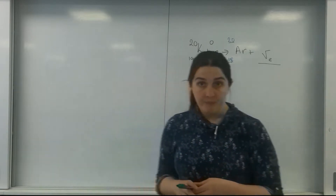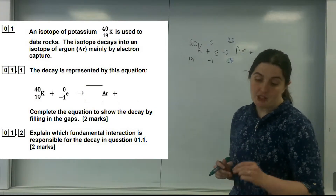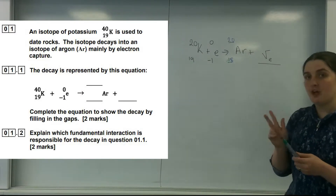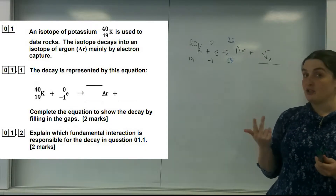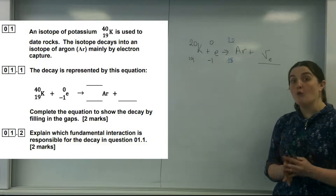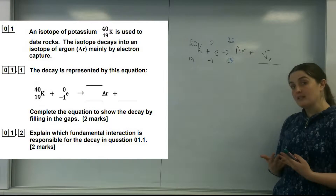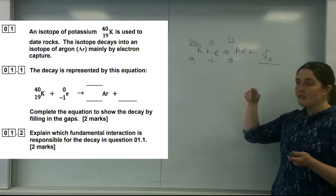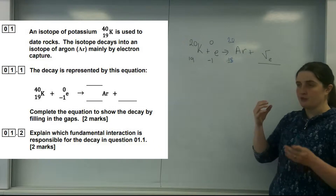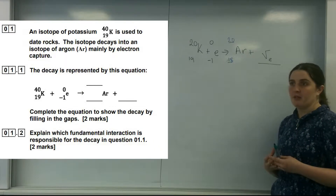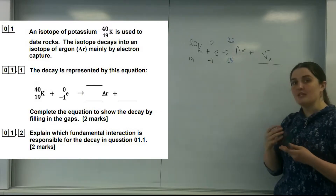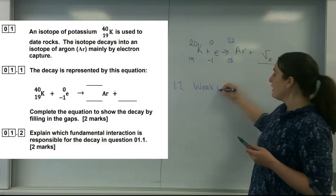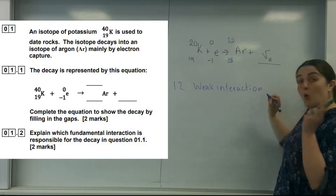Question 1.2: state and explain which fundamental interaction is responsible for this decay. There are three types: strong, weak, and electromagnetic. Strong interactions only involve hadrons, because the strong nuclear force only affects hadrons. As we can see, there is a lepton involved here. This is not a charged particle electromagnetic interaction. Because there are both hadrons and leptons involved, this is a weak interaction — worth one mark.